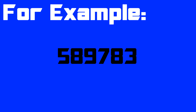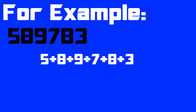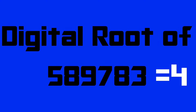For example, let us consider the number 589783. To find the digital root, we add the digits: 5 plus 8 plus 9 plus 7 plus 8 plus 3, which equals 40. Now, 40 is still not a single digit number, so we add further — 4 plus 0, which equals 4. So the digital root of 589783 is 4.